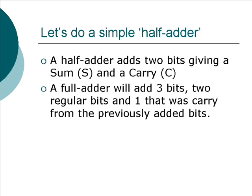Let's build a simple half adder. A half adder adds two bits, giving two bits, a sum bit and a carry bit. A full adder will add three bits, two regular bits and one that was a carry bit from the previously added bits. But we're just going to build a half adder.